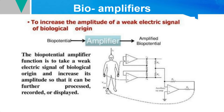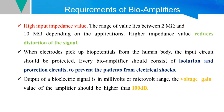There are certain requirements for designing bioamplifiers. The first basic requirement is that it should have a very high input impedance. A high input impedance reduces distortion of the signals. Whenever biological signals are picked up from the patient's body, there may be distortions or noise added due to the environment. If the system maintains a high input impedance between 2 megaohms and 10 megaohms, it can avoid noise and distortion in the signal.